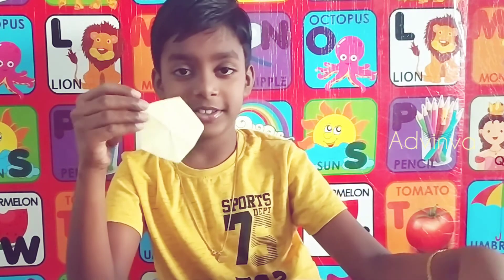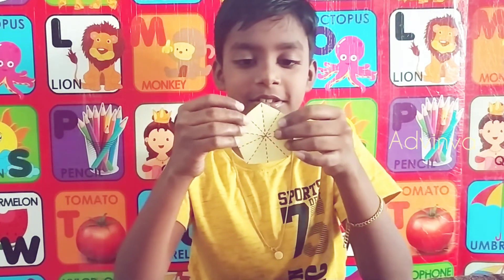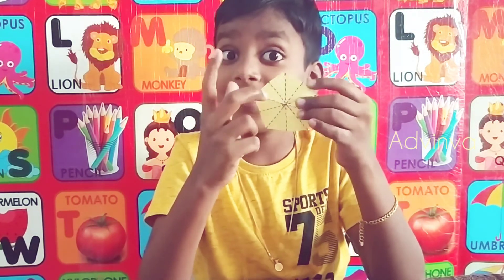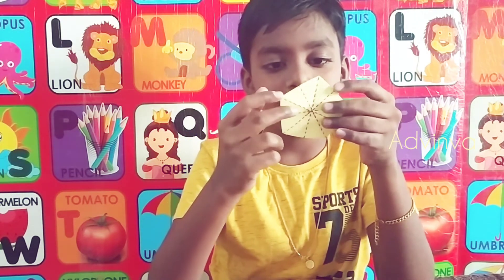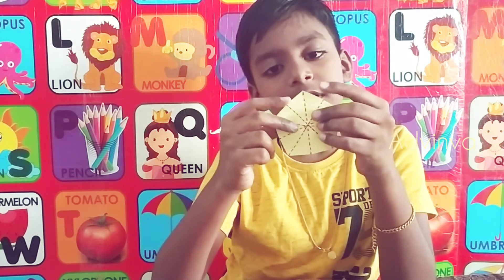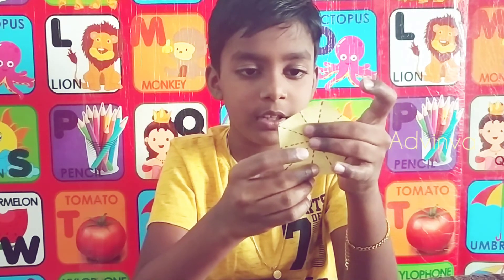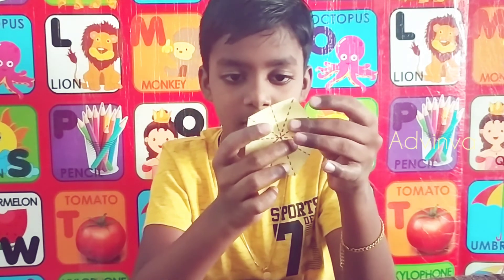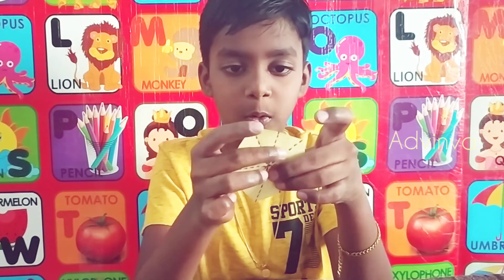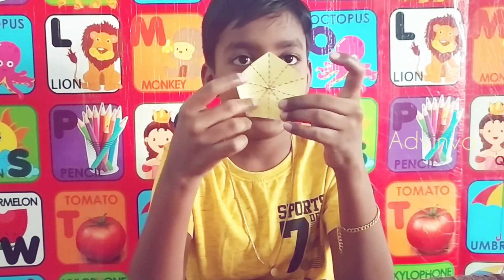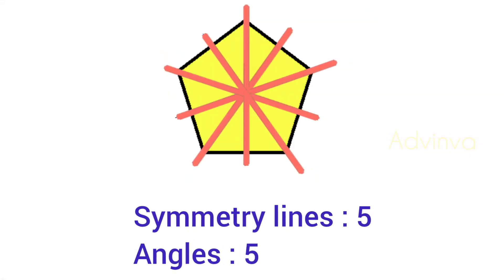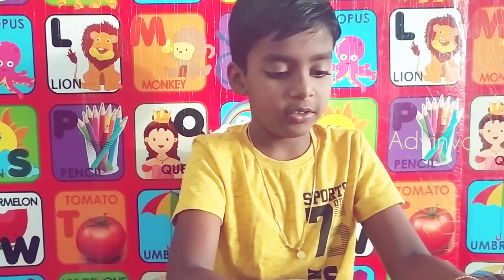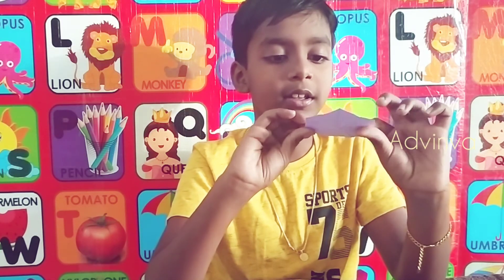Now let's go to the pentagon. Maybe it has five symmetry lines, I'm thinking. Let's see: one, two, three, four, and five. Yes, it has five symmetry lines!